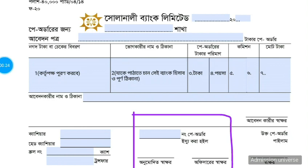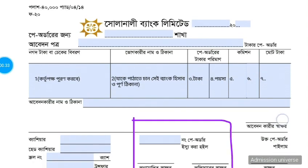So we have to get a pay order, and we have to process a loan to make them a pay order.